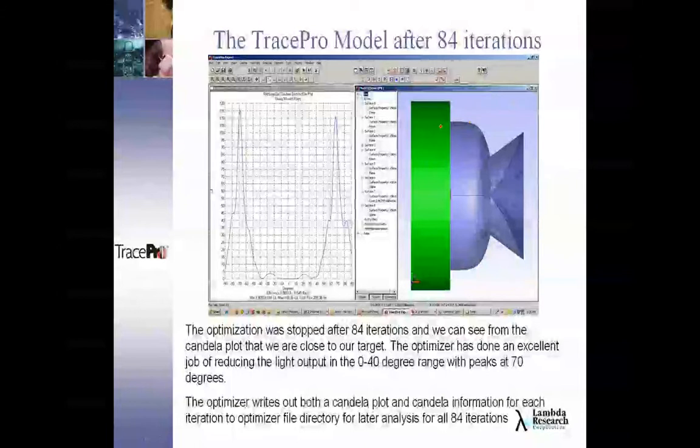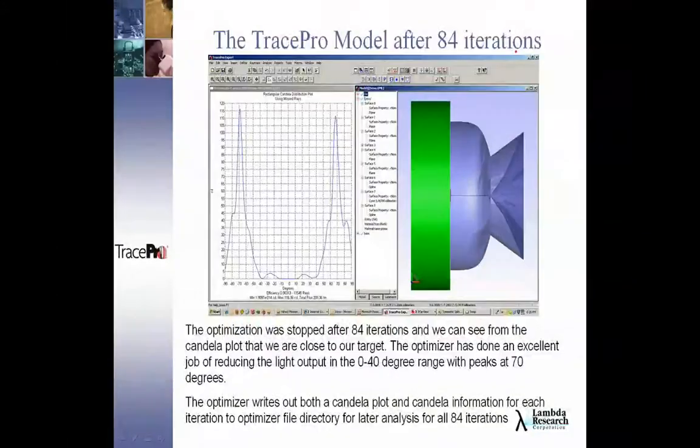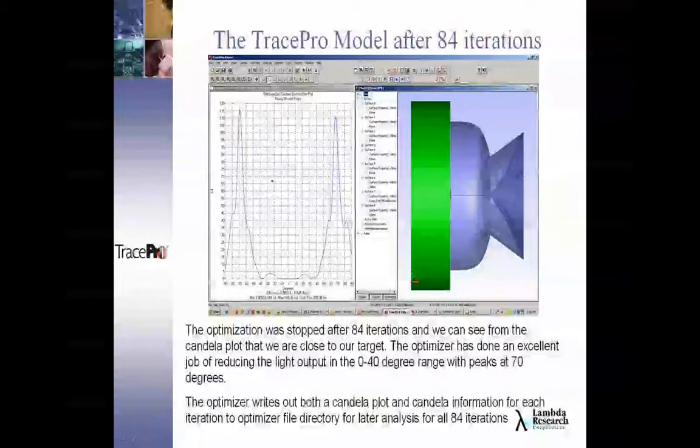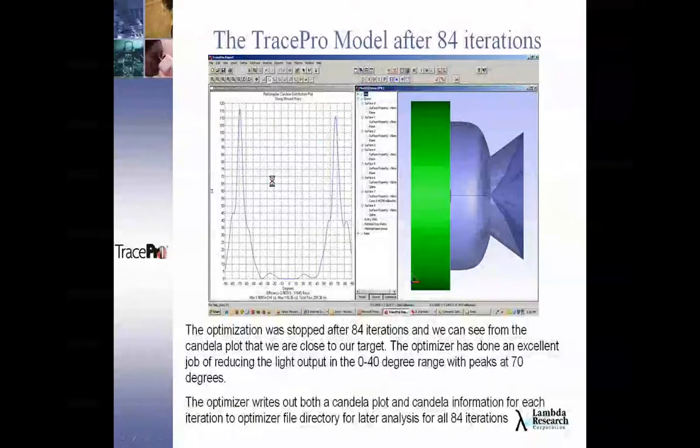Every single one of these iterations is written to a temporary file. You can go back and see what the values were for those points that we specified as being variables, and we can investigate them afterwards. And there's even a candela plot that looks exactly like this that's also written out for all 84 of those iterations.